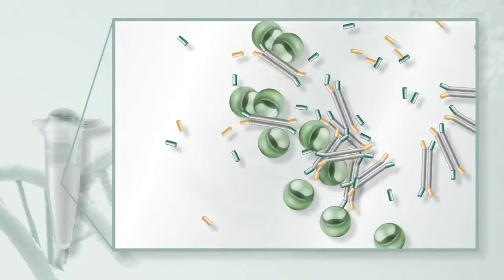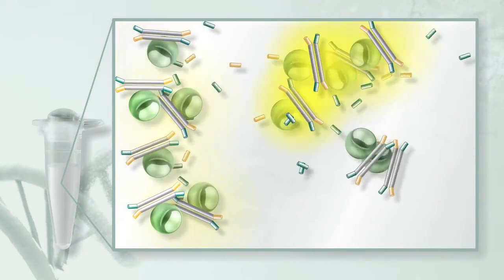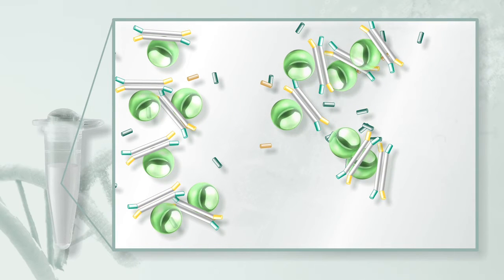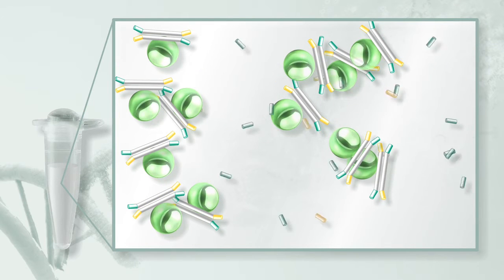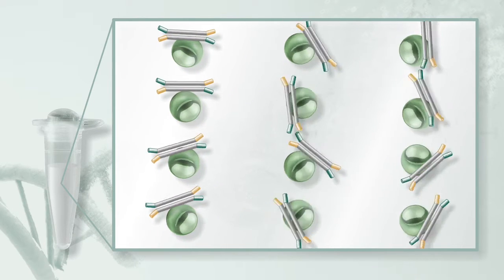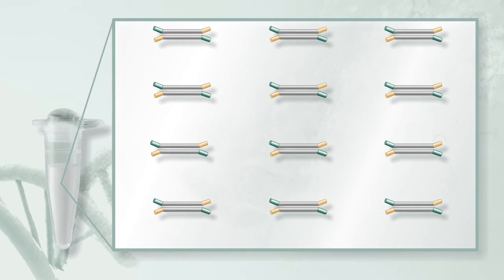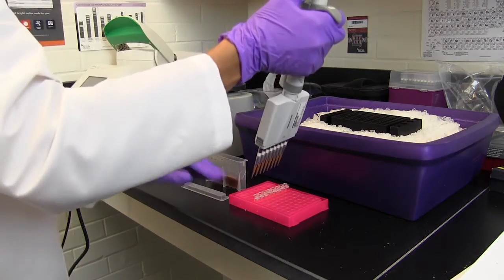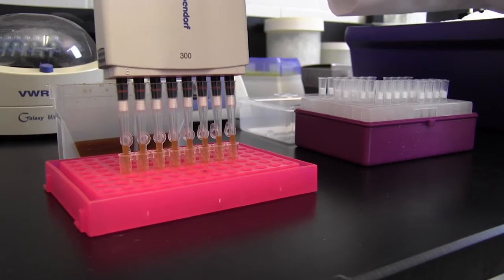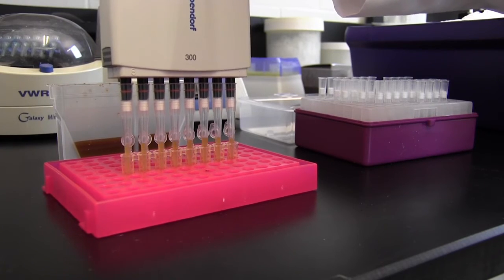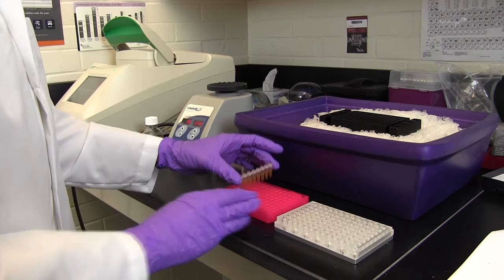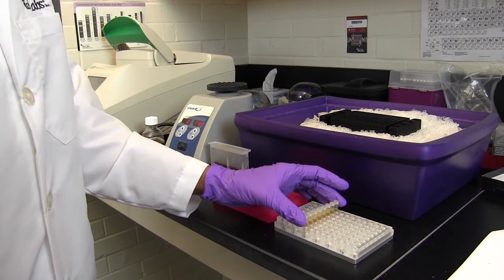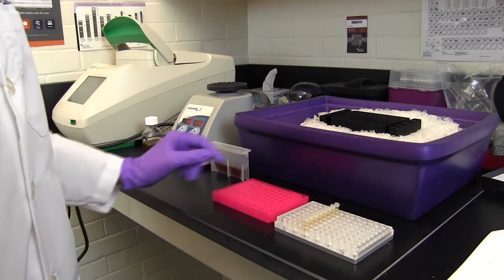This step also uses magnetic beads but this time there is a single step after which the desired DNA, the library, is bound to the beads. Don't discard the beads. Add 45 microliters of vortexed magnetic beads to the reaction and mix well by pipetting up and down at least 10 times. Incubate at room temperature for 5 minutes followed by exposure to a magnetic field.